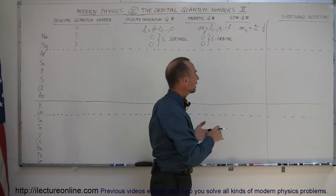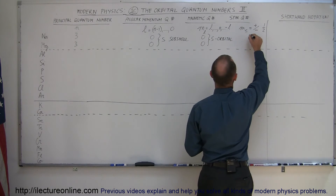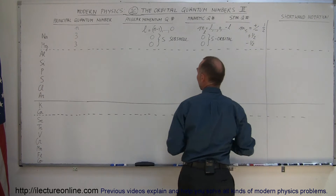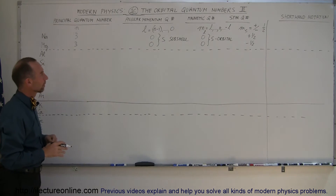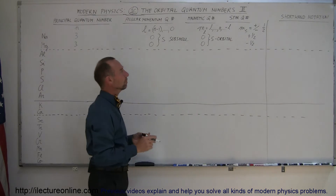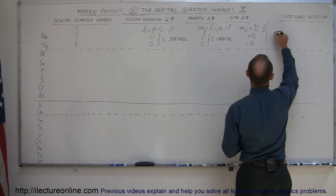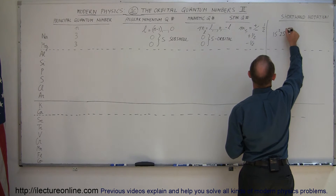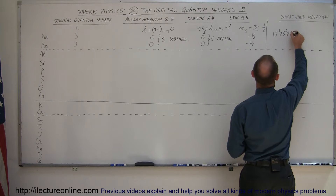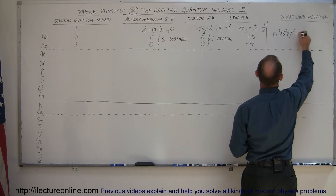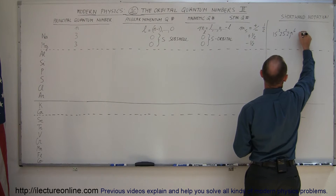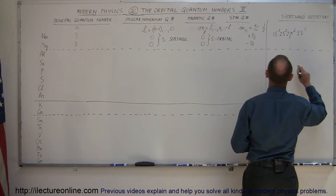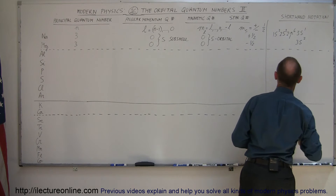The spin number can be either plus or minus one-half for the two electrons, and that is how the next two electrons for sodium and magnesium are filled. In shorthand notation, we have the 1s² orbital filled, the 2s² orbital filled, the second energy level P-orbitals filled, and now the third energy level S-orbital with one electron for sodium, and 3s² with two electrons for magnesium.